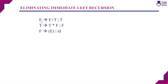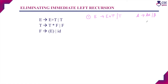First we will eliminate the left recursion in the first production: E derives E plus T or T. This is of the general form A derives A alpha or beta. Whenever a grammar is of this form, to eliminate the left recursion we implement a two-step production: A derives beta A-dash, and A-dash derives alpha A-dash or epsilon.